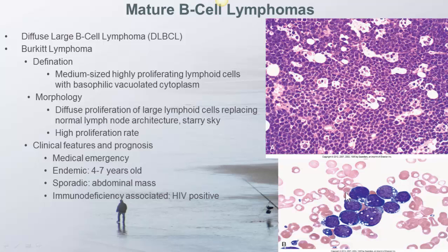The image at the bottom shows typical Burkitt lymphoma cells — medium-sized lymphoma cells with rounded nuclei, clumped chromatin, and small nucleoli. Because of the high proliferation rate, Burkitt lymphoma is considered a medical emergency. There are three types: the endemic type affects kids from 4 to 7 years old, the sporadic type presents with an abdominal mass, and the immunodeficiency-associated type is seen in HIV-positive patients.